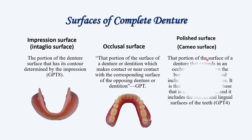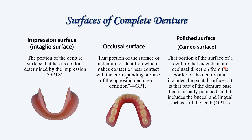Next, we have the polished or cameo surface. It is that portion of the surface of the denture — you can see this pink portion — that extends from the border of the denture in the occlusal direction and includes the palatal surface also. In maxilla, you can see the complete area covered with acrylic is included in the polished surface. It is that part of the denture base that is usually polished and it includes the buccal and lingual surfaces of the teeth. Other than the teeth area, all other surfaces are called the polished surface or cameo surface.